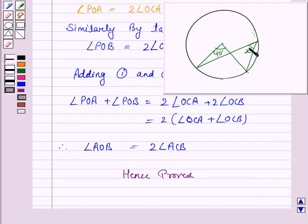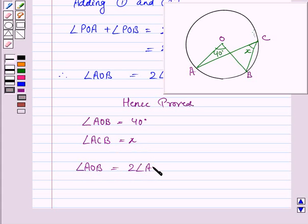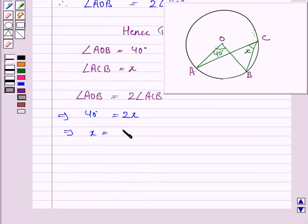Now in the second part, we have to find the value of x. We have angle AOB equal to 40 degrees and angle ACB is x. From the above result, angle AOB is twice the angle ACB. So 40 degrees equals twice of x, which implies x equals 40 degrees divided by 2, that is 20 degrees. Hence the value of x is 20 degrees.